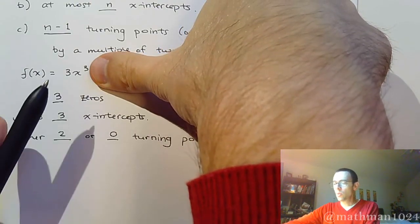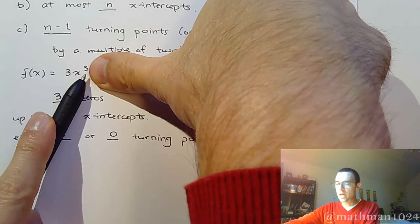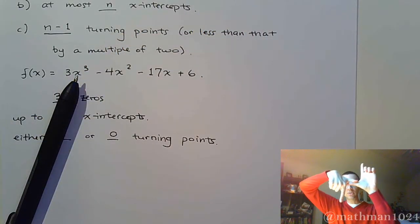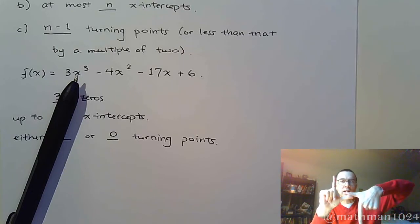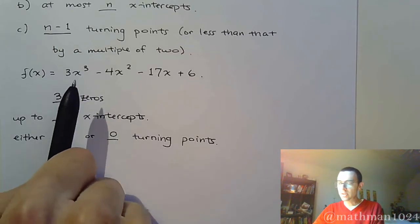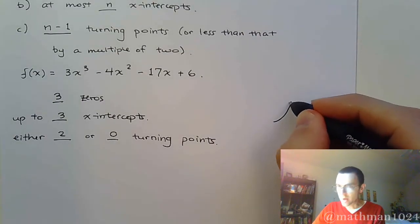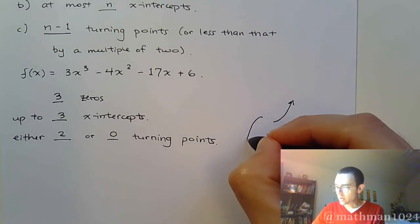This is x to the third. So, I know my end behavior is supposed to either be cactus like this, or an upside down cactus like that. Since the lead coefficient is positive, I know that my end behavior is going to be going up on the right, and going down on the left.